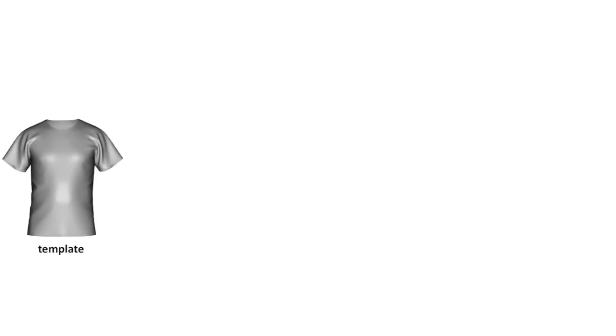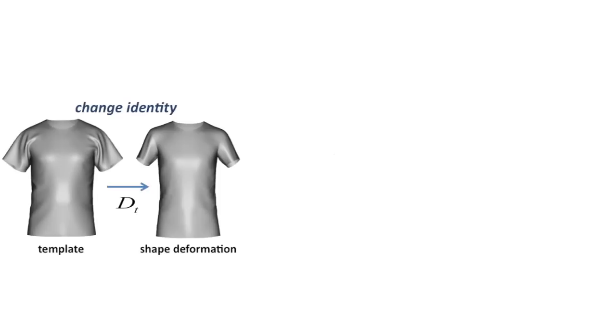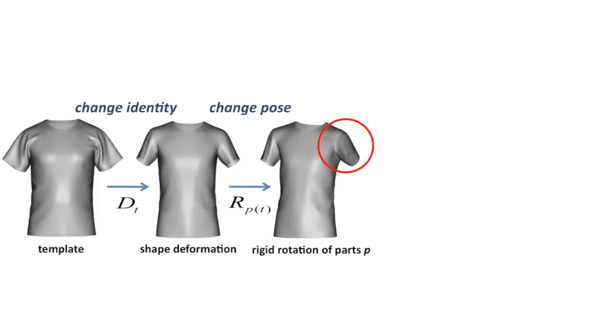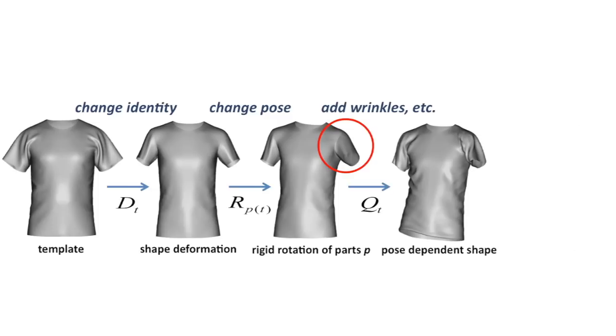Pose-independent shape deformations are learned from the shape training data using PCA. Pose deformation is decomposed into rigid rotations that match the part rotations of the underlying scape body, and a non-rigid component learned as a second-order dynamics model of the rigid rotations, history frames, and body state changes.